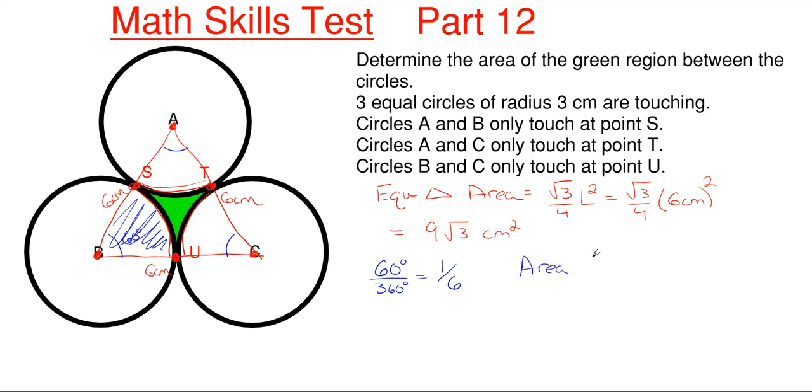So that means that our area of our sector for just one of these sectors is going to be pi r squared over 6. Well, the area of our sectors are going to be individual sectors for each of these is going to be pi times the radius of that circle, which is just 3 centimeters squared, over 6, which gives me 3 pi over 2 centimeters squared.